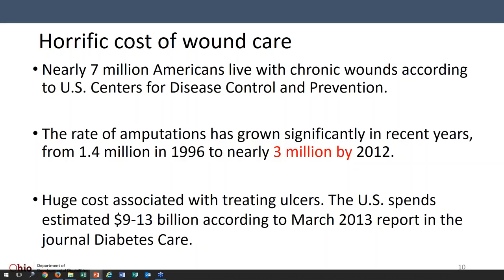The United States spends $9 to $13 billion — and that was in 2013, so it's probably gone up since then — on the care of ulcers. That figure is from Diabetes Care, and it is $9 to $13 billion with a B.